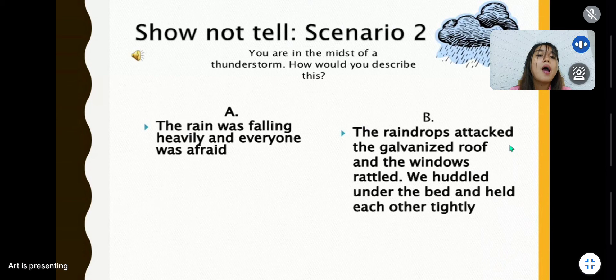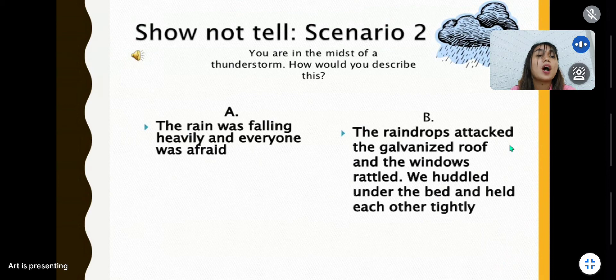Letter B, very good. Letter B. Why? Because in this passage we can see that the writer is describing an object—the roof, galvanized roof—and also the writer is describing the raindrops that attack their galvanized roofs and the windows rattled. So the writer is describing an object.